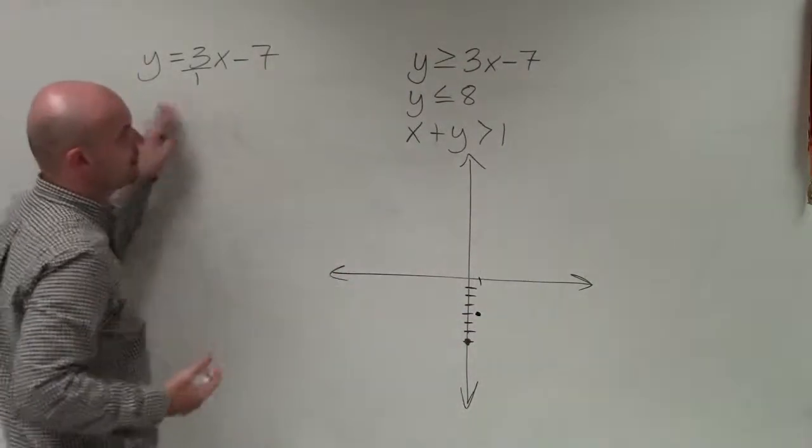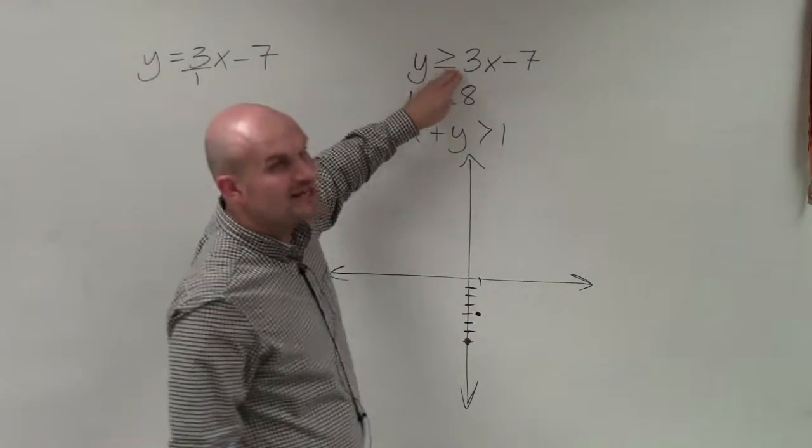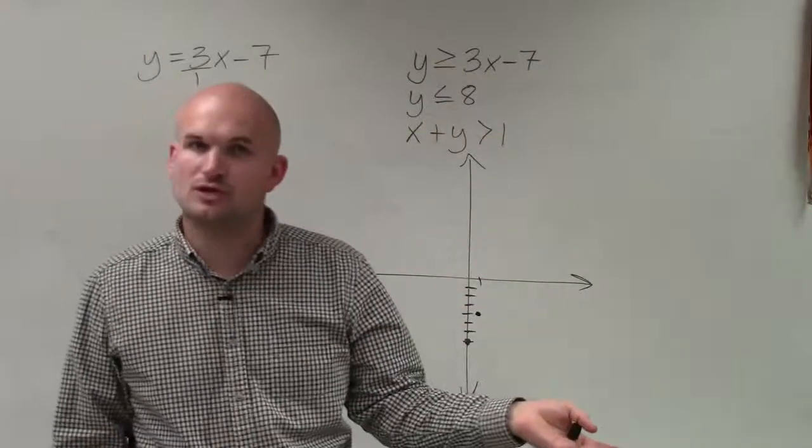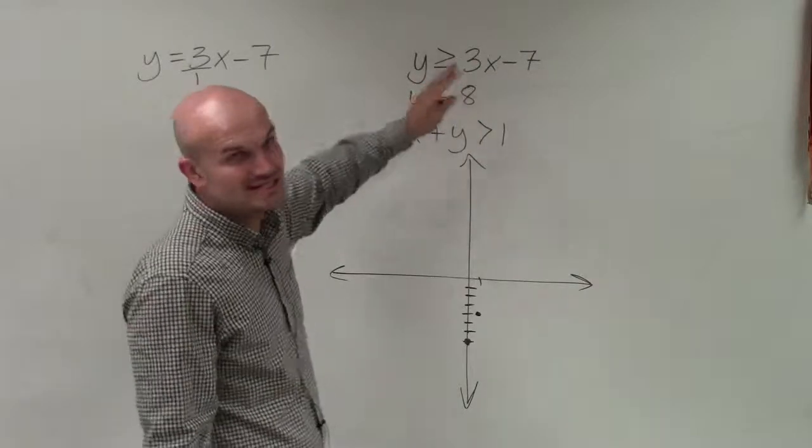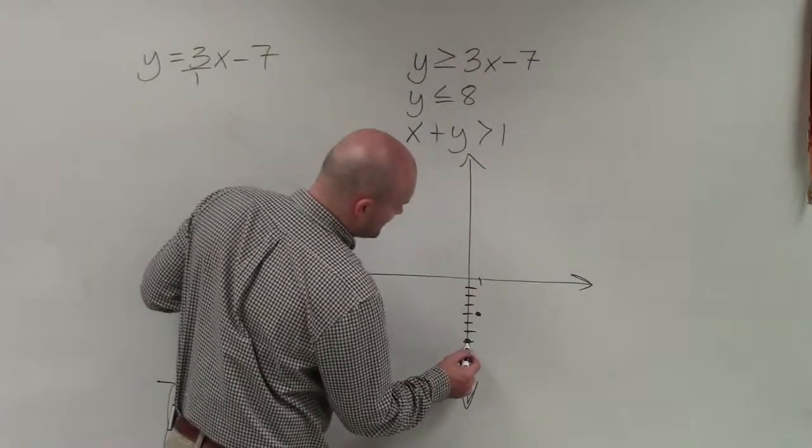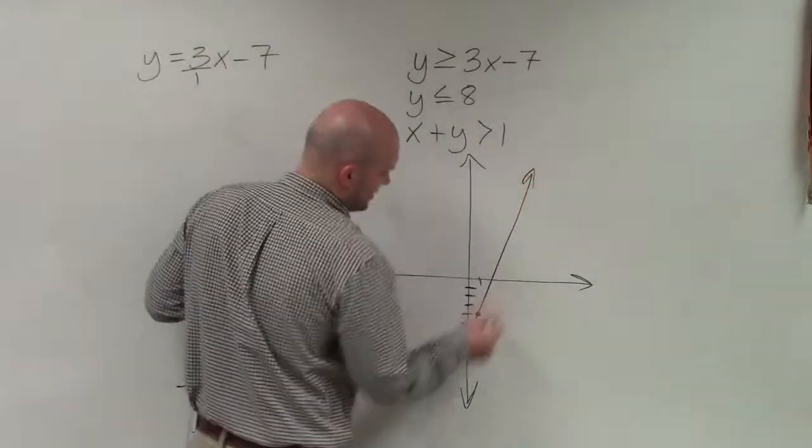Now before I connect my points, I want to go back to my inequality and determine if my boundary line is going to be a part of the solution or not. It's a part of the solution if it's greater than or equal to, or less than or equal to, which in case this is. So to represent it being a part of the solution, I am going to graph a solid line.